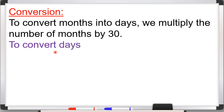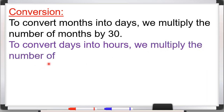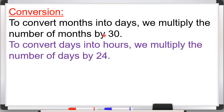To convert days into hours, we multiply the number of days by 24. उपर वाले में आपने सिखा कि one month में 30 दिन होती हैं। When you convert days into hours, जब हम दिनों को घंटों में बदलते हैं, तो हम number of days को 24 से multiply करेंगे। Because one day is equal to 24 hours.